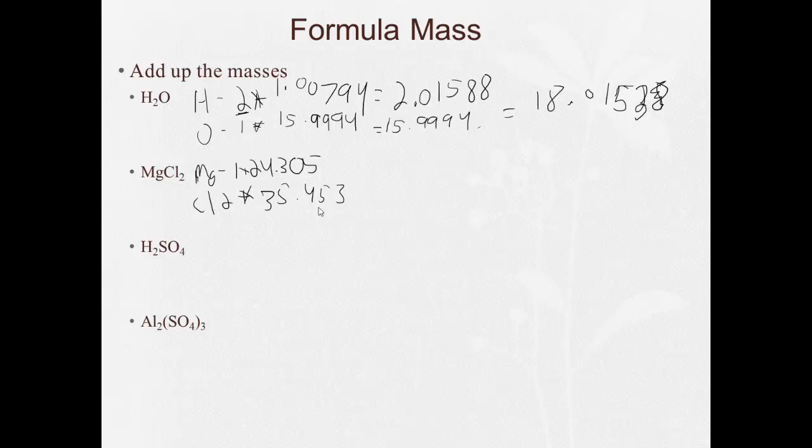And I'm just going to do the same things I did before. 35.453 times 2. Now I'm going to add that to 24.305. And I get 95.211 AMU.